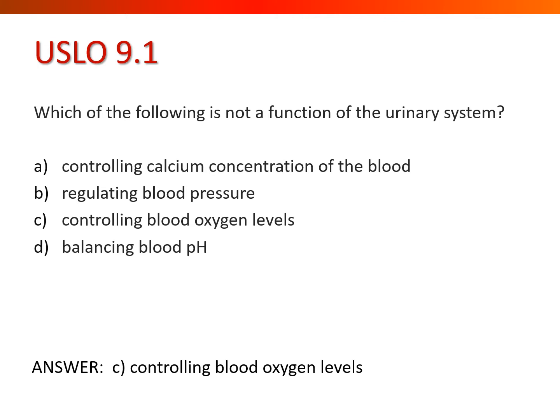Blood calcium is controlled by parathyroid hormone and it does have the effect of pulling calcium out of filtrate, so it does work on the kidneys. We have mechanisms that allow the kidneys to influence blood pressure by removing fluid from filtrate — aldosterone, ADH, and atrial natriuretic peptide all play roles. The kidneys balance blood pH by adding or removing hydrogen ions and leaving in or pulling out bicarbonate ions.